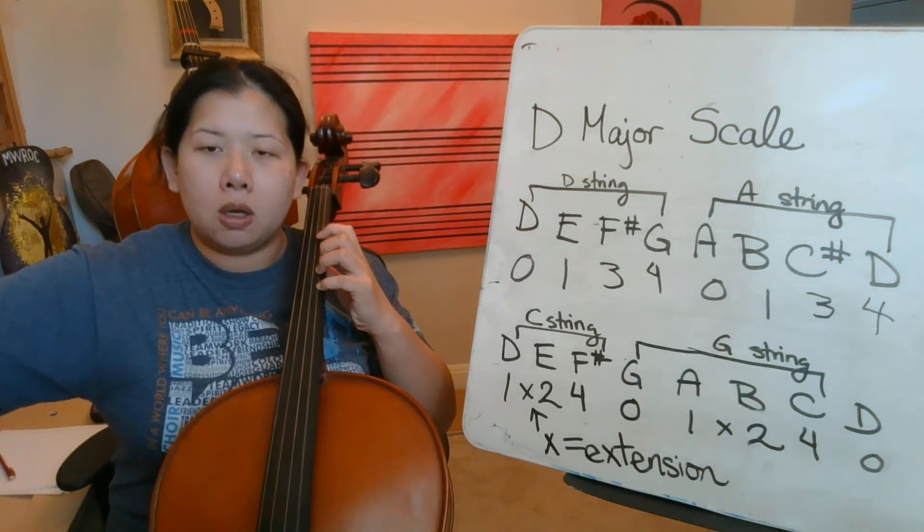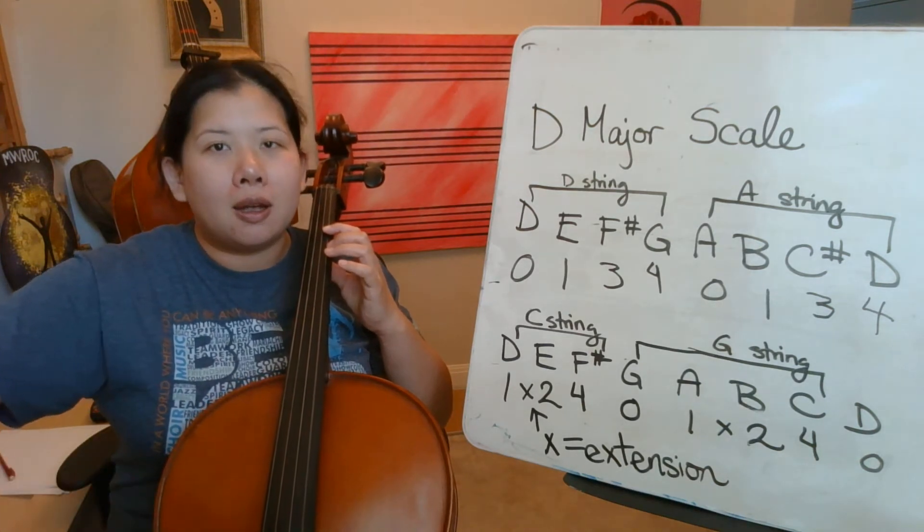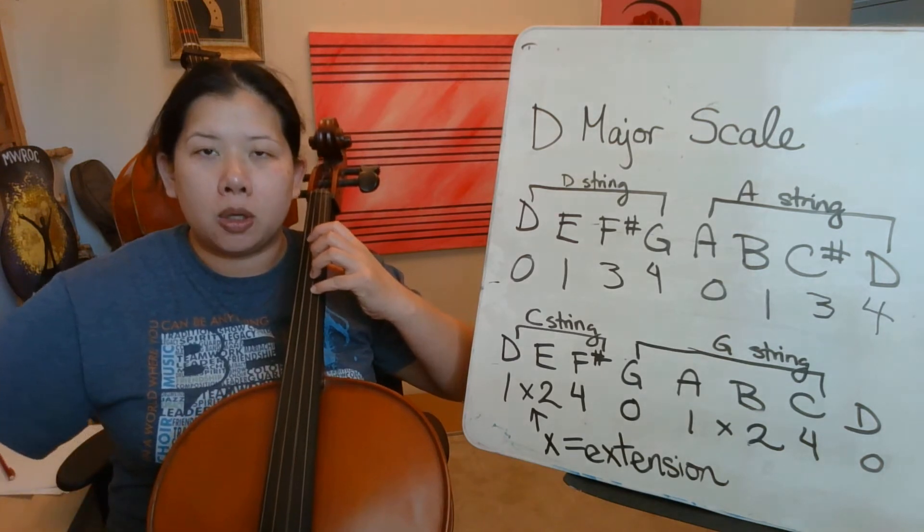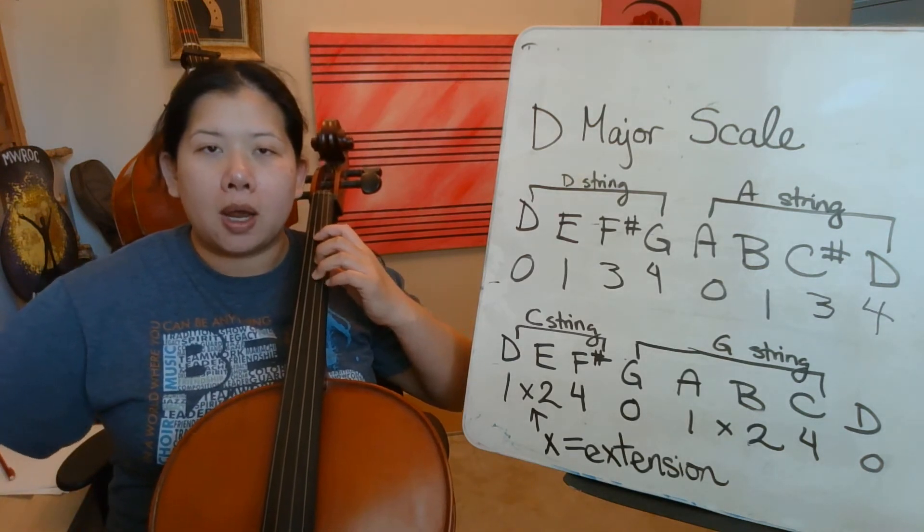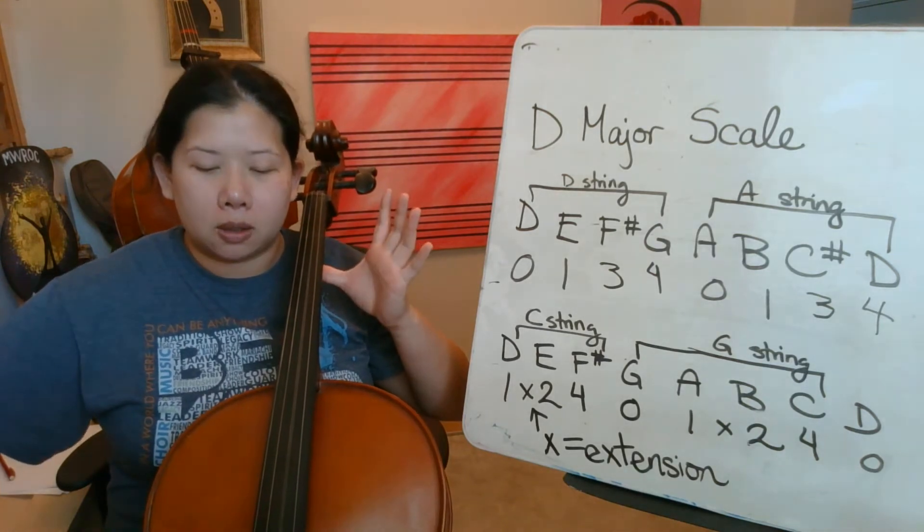D, blue. C sharp. Red. E, yellow. A. Fourth finger, G, blue. F sharp, red. One, E, yellow. E. Alright, this time you're going to say the note names aloud, and we'll play it.